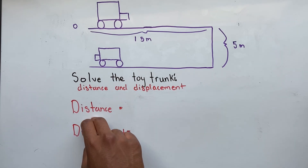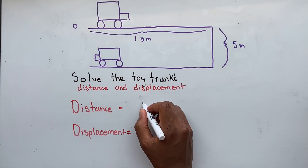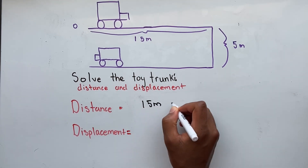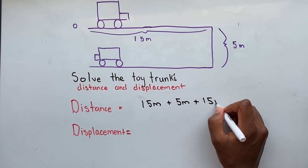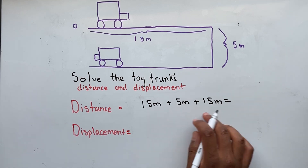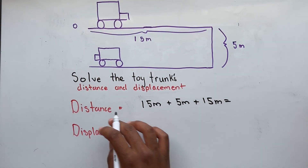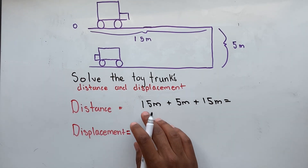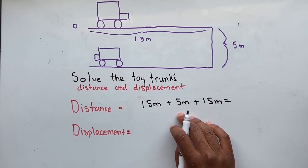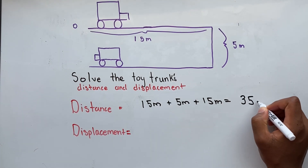Let's solve our distance first. Remember, distance is defined as the total length an object has traveled. So our toy truck traveled 15 meters, then 5 meters, then 15 more meters. You may be wondering why these two values aren't negative since we went down and to the left — because when we're dealing with distance, we only care about the magnitude of the numbers. So we have 15 meters plus 5 meters plus 15 more meters, giving us a total of 35 meters for our distance.